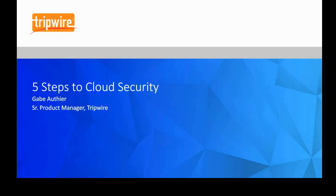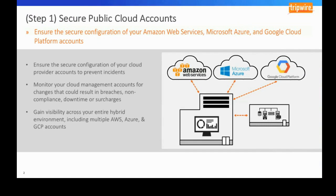The first step in securing your public cloud environments is ensuring that your accounts are set up properly and have a secure configuration. Through Tripwire Enterprise and the cloud management assessor, we allow you to look at how each individual cloud account is set up — whether it's an Amazon AWS account, a Microsoft Azure account, or a Google Cloud Platform account. We make API calls and run tests against how each account is configured, then report that back into the Tripwire Enterprise console.